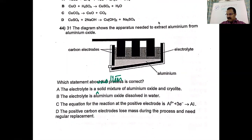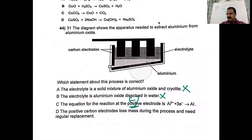The diagram shows the apparatus to extract aluminum from aluminum oxide. Which statement is correct? The electrolyte is a molten mixture of aluminum oxide and cryolite — that's correct. The positive carbon electrodes lose mass during the process and need regular replacement — that is also correct, because oxygen produced reacts with the anode itself.